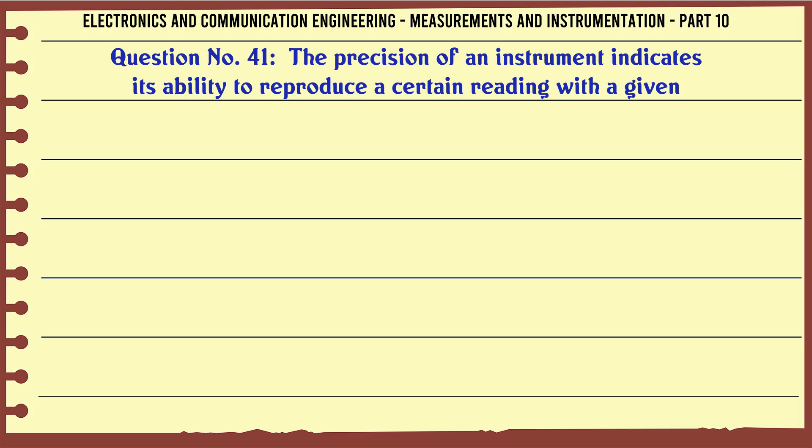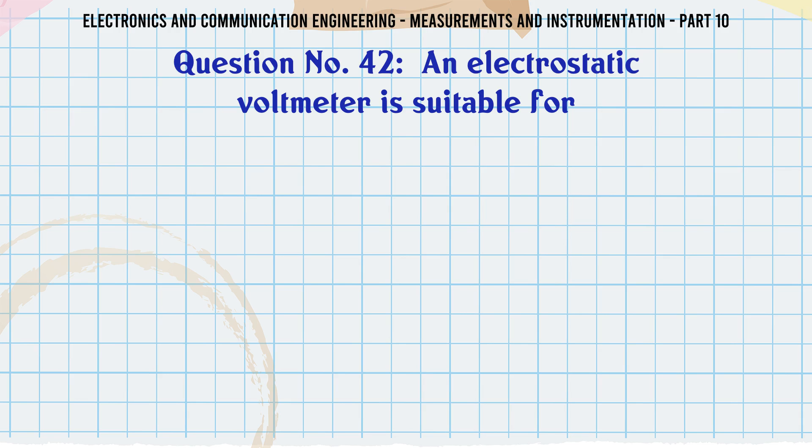The precision of an instrument indicates its ability to reproduce a certain reading with a given: A) drift, B) resolution, C) shift, D) consistency. The correct answer is consistency.